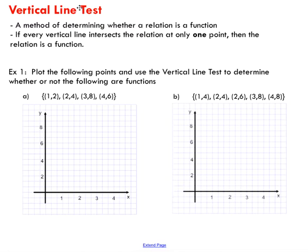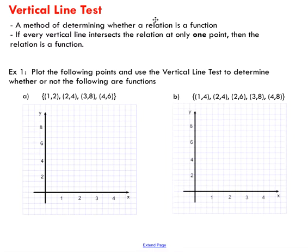The vertical line test is a way of determining whether a relation is a function. Not all relations are functions, but all functions are relations.